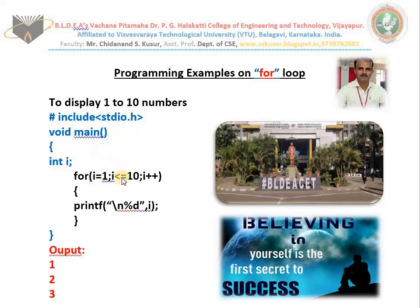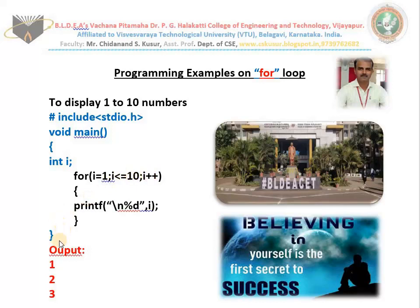After that, the second part will be checked for true or false. One is less than or equals to 10. If it is true, then the body works — 1 will be printed. Afterwards, the third part works: i equals to i plus 1, so i becomes 2. 2 is less than or equals to 10, yes. Then 3, 4, 5, 6, 7, 8, 9, 10. When i becomes 11, 11 is less than or equals to 10 — no. The loop is over. Program is completed.